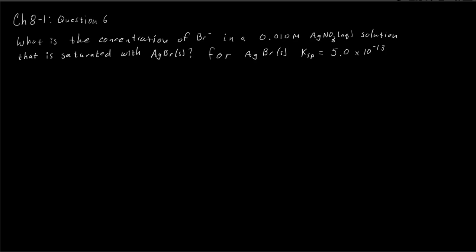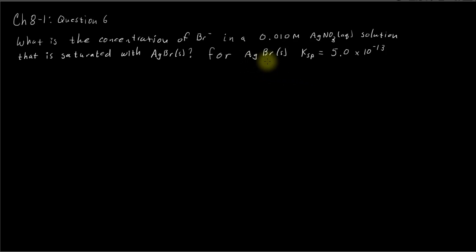In this video, we're going to work a problem a lot like question 6 on the chapter 8-1 problem set. The question says: what is the concentration of bromide, Br⁻, in a 0.010 molar silver nitrate solution that is saturated with solid silver bromide? We're given that for solid silver bromide, the Ksp equilibrium constant is 5.0 times 10 to the negative 13.